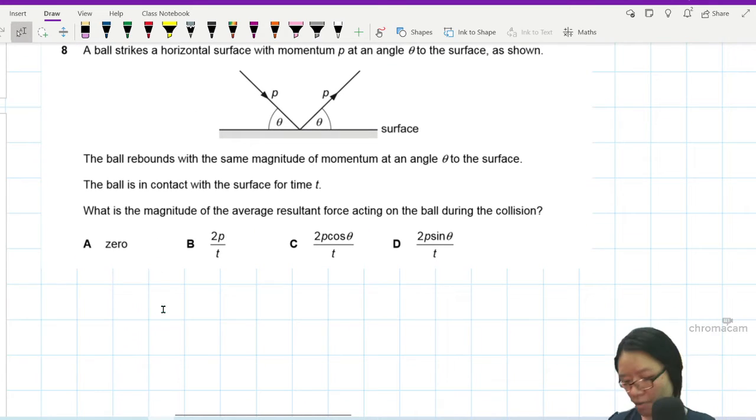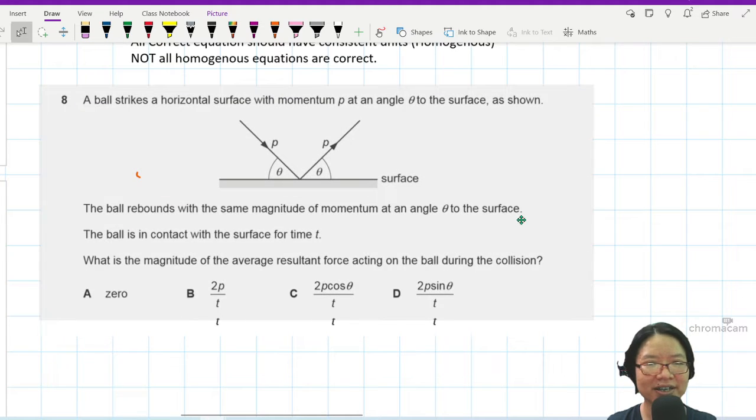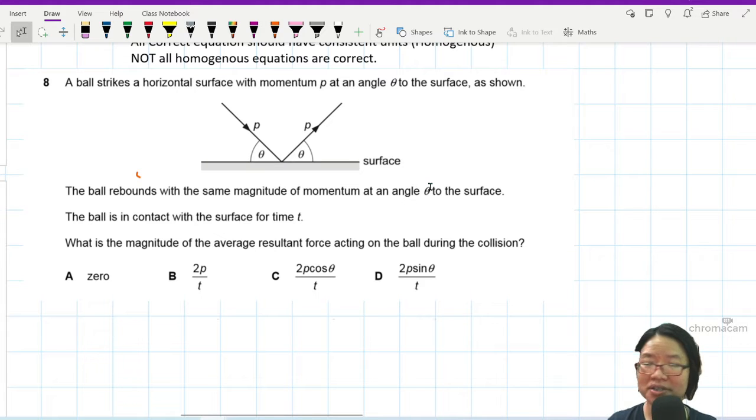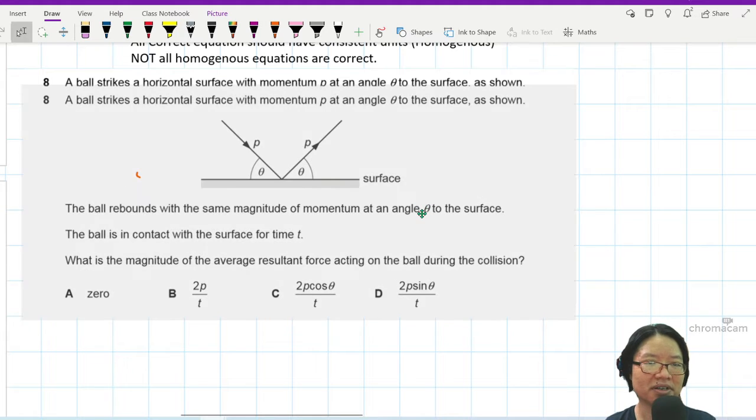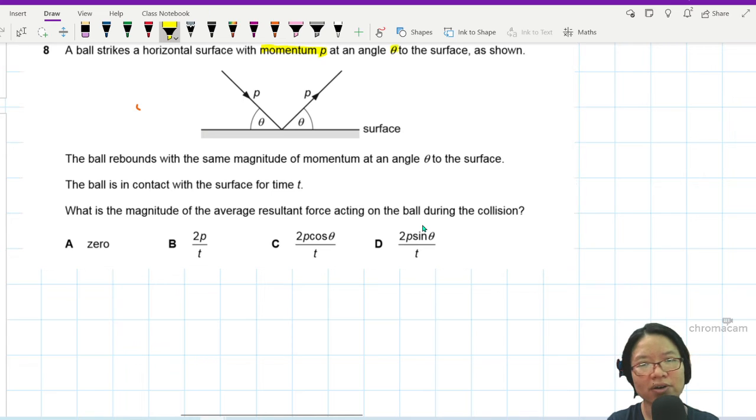Question 8. Here we have a ball striking a horizontal surface with momentum p. This is really interesting. Normally they will tell you that the ball is moving at a certain speed, but in this question they give you momentum straight away. So I'm going to highlight the word momentum at an angle theta to the surface as shown.